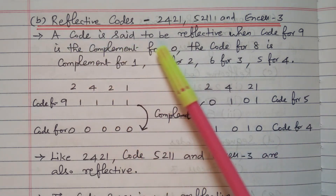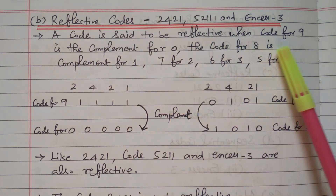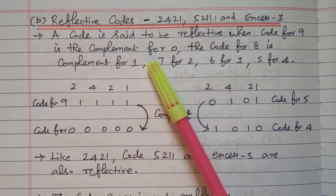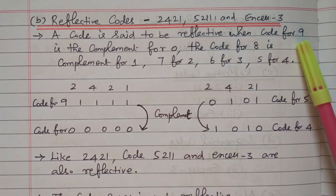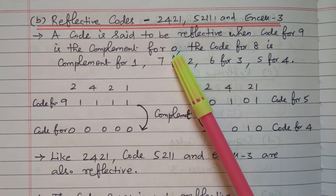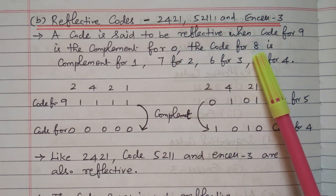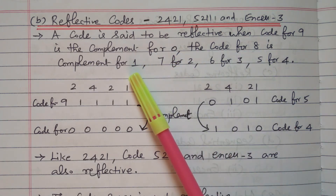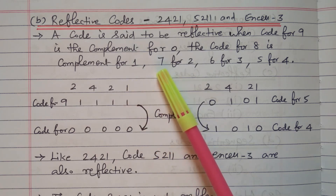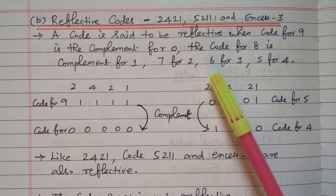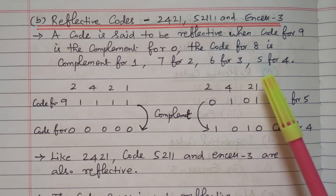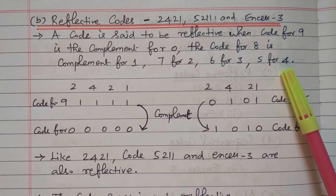A code is said to be reflective when the code for nine is the complement of the code for zero. So code for nine and code for zero are complement. Similarly, code for eight and code for one are complement. Code for seven and code for two are complement. Code for six and code for three are complement. Code five and code four are complements.